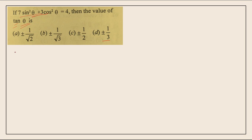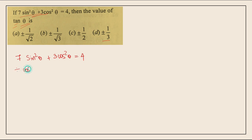We know that sin²θ divided by cos²θ is tan²θ. So we will divide the equation 7sin²θ plus 3cos²θ equals 4 throughout by cos²θ, because sin² over cos² gives tan².